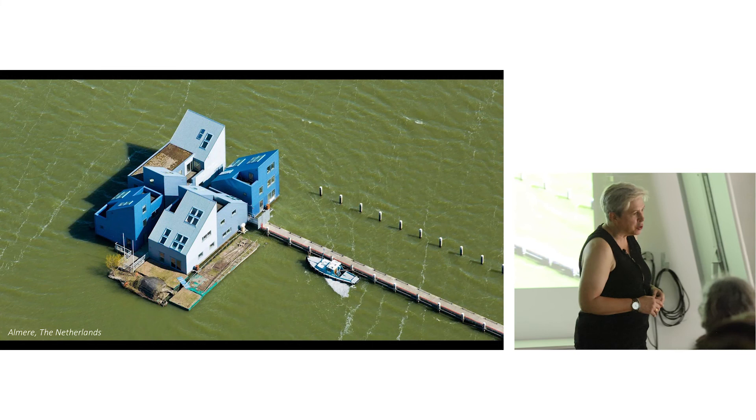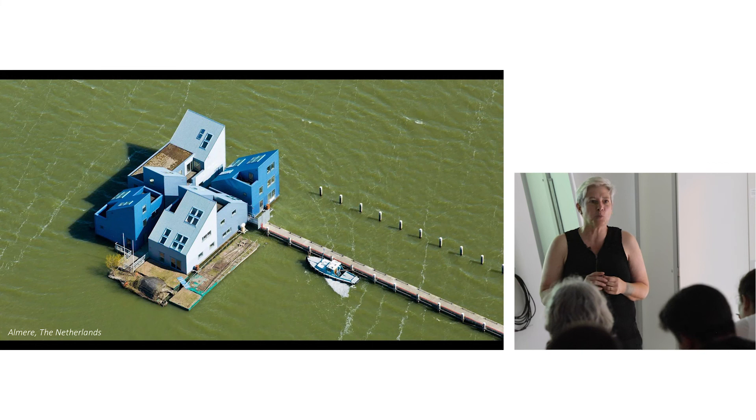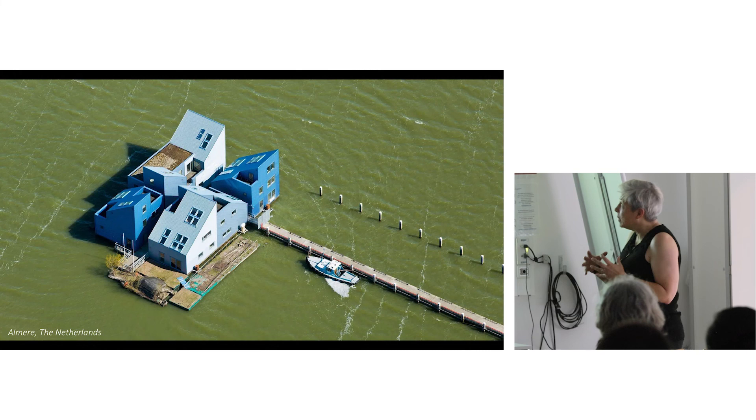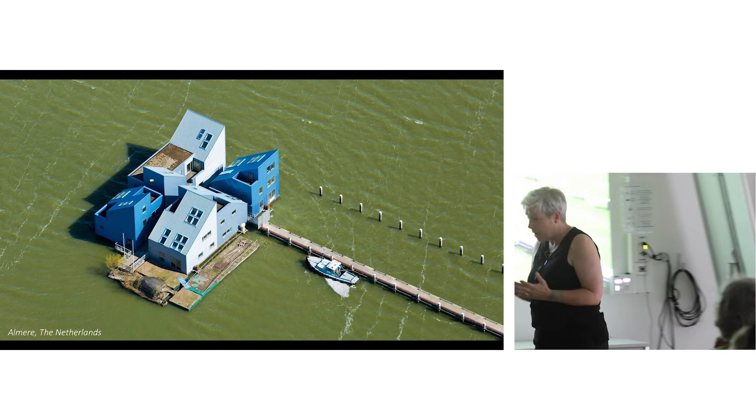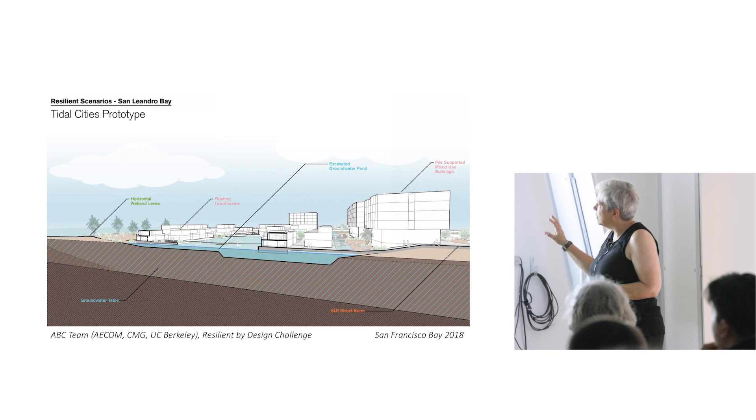There are good examples from Amsterdam now, a development called Steiger Island, that has a potential density of about 70 units per acre. It could be fairly dense, what we would think of as medium density in the United States. All of our densities are scaled down compared to European and certainly Asian densities. But this is the kind of thing that we're now talking about.